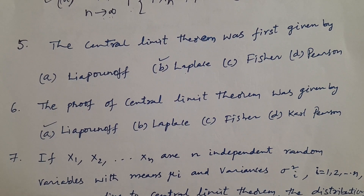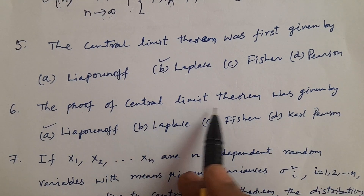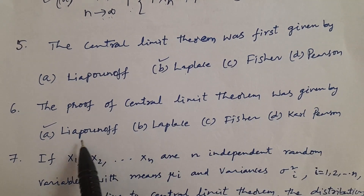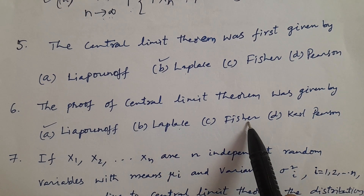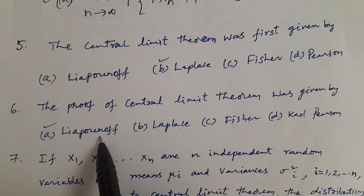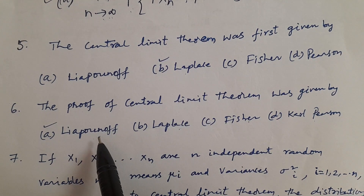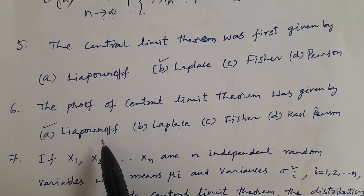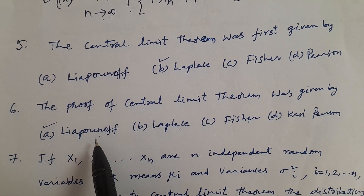The proof of the central limit theorem was given by: A. Liapunov, B. Laplace, C. Fisher, D. Carl Pearson. The answer is Liapunov. The proof of the central limit theorem is associated with two mathematicians — Laplace and Liapunov.